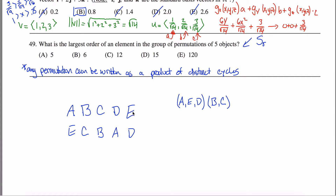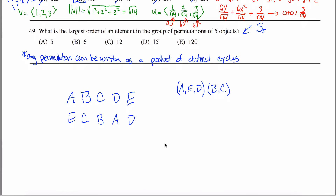The question is: what is the largest order among those 120 elements? You could list them all out, but obviously you don't want to do that. The key insight is to take advantage of the fact that any permutation can be written as a product of distinct cycles.